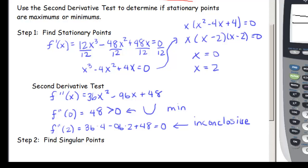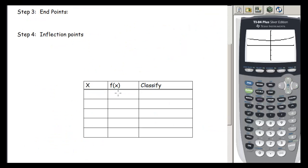The next step is to find singular points. Looking at our derivative — a polynomial — there's nothing illegal to plug in, so we have no singular points. In step 3 we look for endpoints, and we were given the interval [-2, 3], so the endpoints are x = -2 and x = 3.